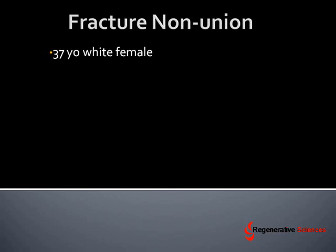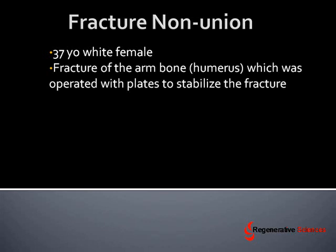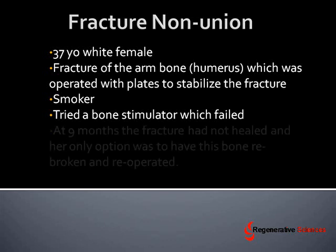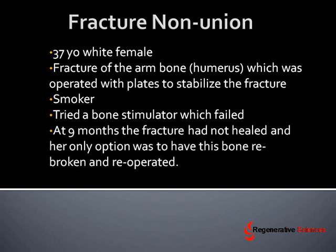Here's a case of a 37-year-old white female who had fallen over her dog and injured her arm bone, or humerus, which was operated on with plates to stabilize the fracture. This was a fairly big fracture, and regrettably she was a smoker — in smokers it's very common that the fracture doesn't heal. She had tried a bone stimulator which had failed, and at nine months the fracture had not healed. Her only option was to have the bone rebroken and re-operated, or to do a bone graft to the site.